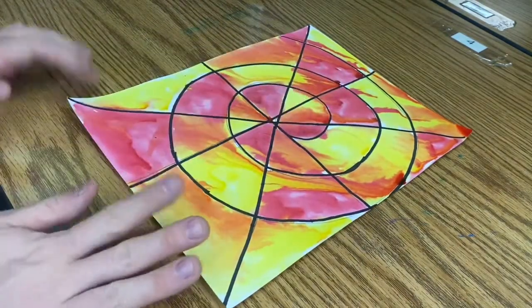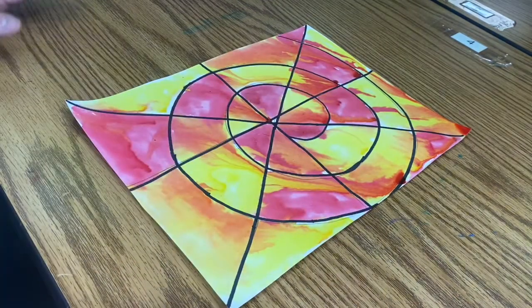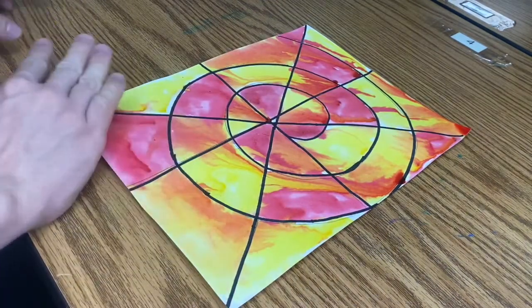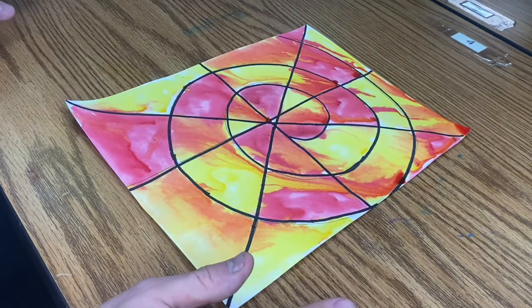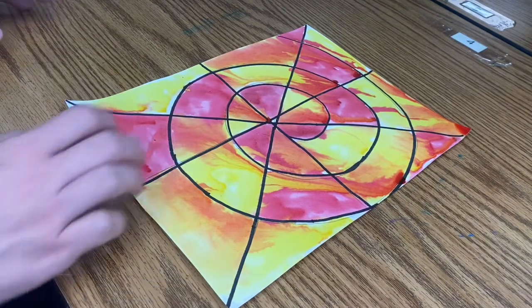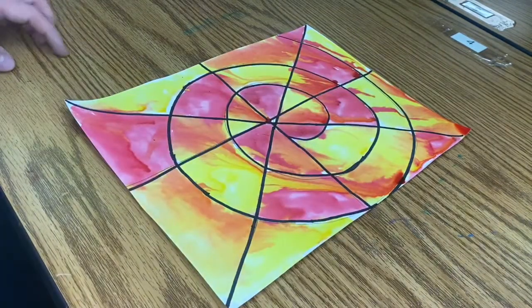Leave a little spot for your spider webs. I don't want to see any white space—no white space whatsoever. We have paint, so we're going to use it. You can also go back and add more color today if you want to.